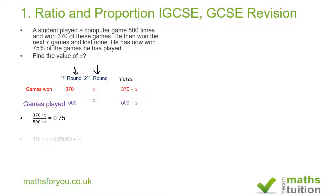Cross-multiplying gives us: 370 + X = 0.75 × (500 + X). Expanding the bracket on the right-hand side gives: 370 + X = 375 + 0.75X.